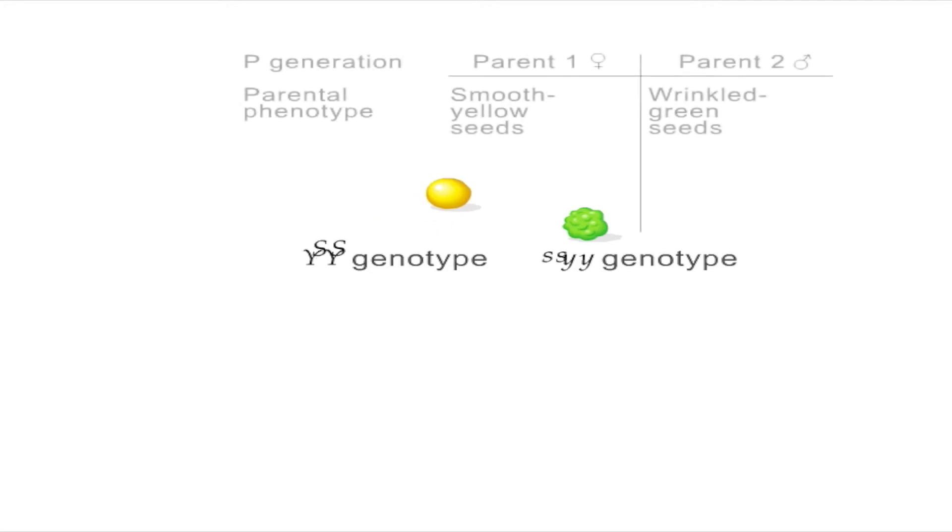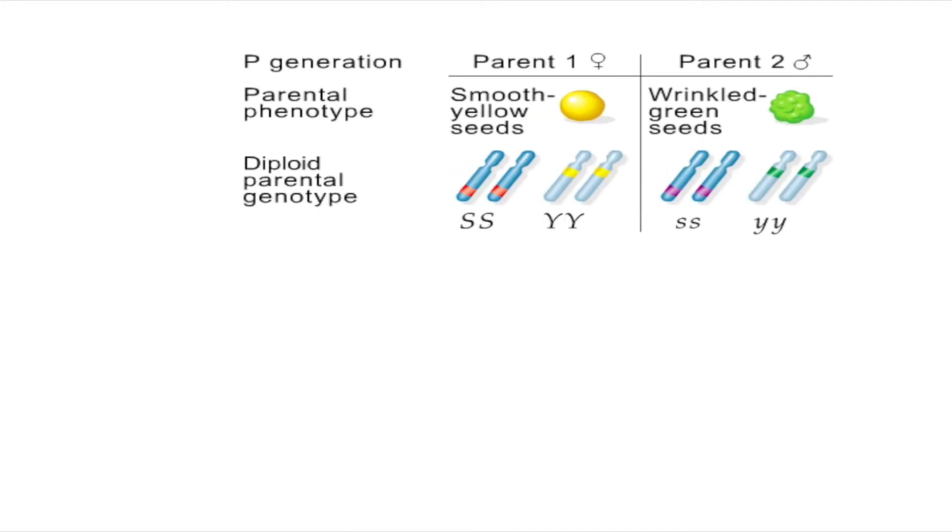We know that Mendel's factors are genes and genes occur in pairs on homologous chromosomes in diploid organisms. Therefore, the genotypes of these plants can be depicted on the chromosomes as shown. What will happen when these two plants are mated?